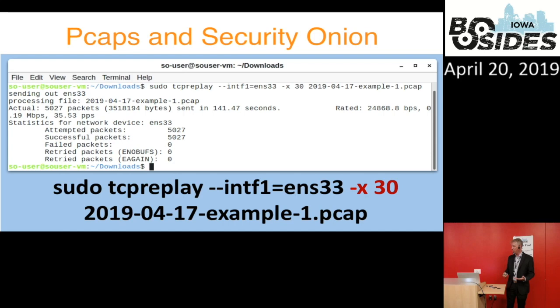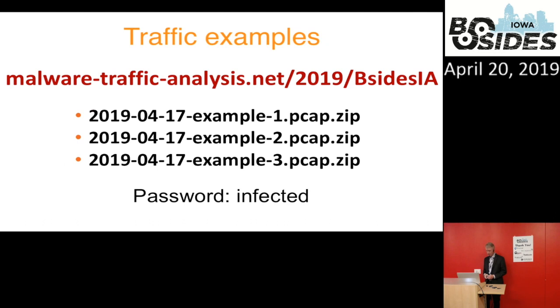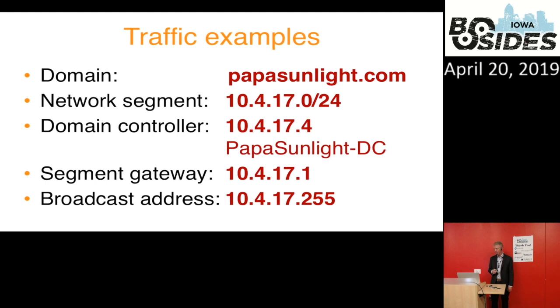We have three PCAPs to look at right now — three examples of malicious traffic, available at malware-traffic-analysis.net/2019/b-sides-ia. They're all set up in an Active Directory environment: the domain is papasunlight.com, the network segment is 10.4.17, the domain controller is on .4 (papasunlight-dc), and we also have the segment gateway and broadcast address. This gives us the network context for three examples of Windows malware infection traffic.